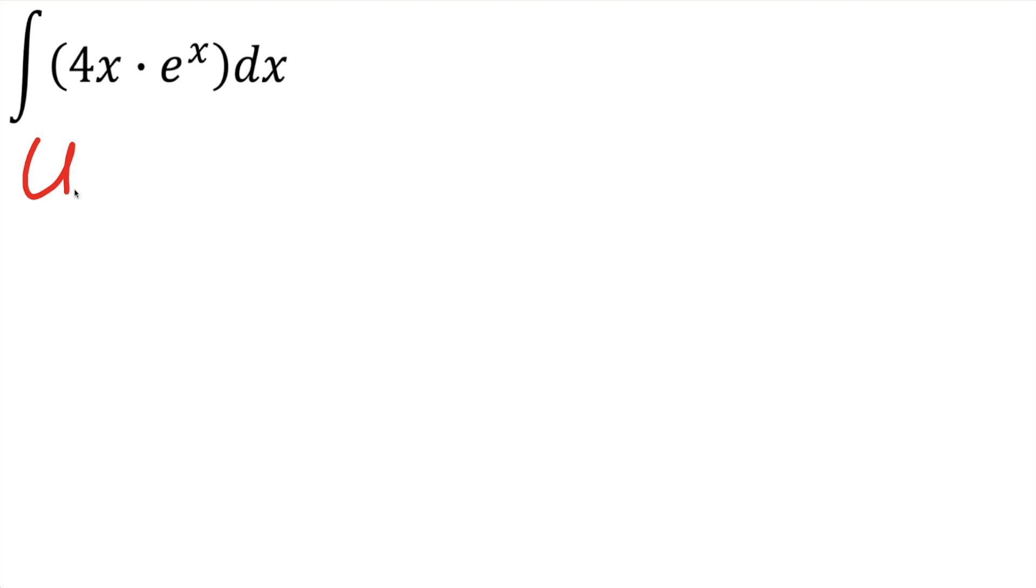So we'll have our u and our du, we'll have our v and our dv. Our u term, we'll be able to take the derivative of it, and so the piece that we can take the derivative easily would be 4x, and then our dv term would be the part we can easily take the integral, and that's going to be e raised to x dx.